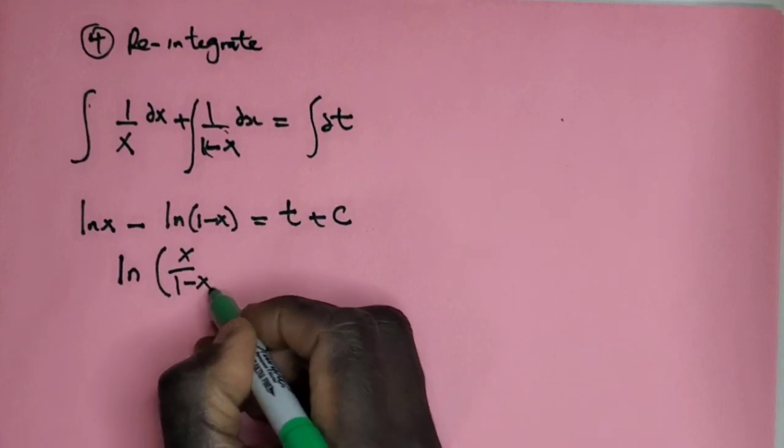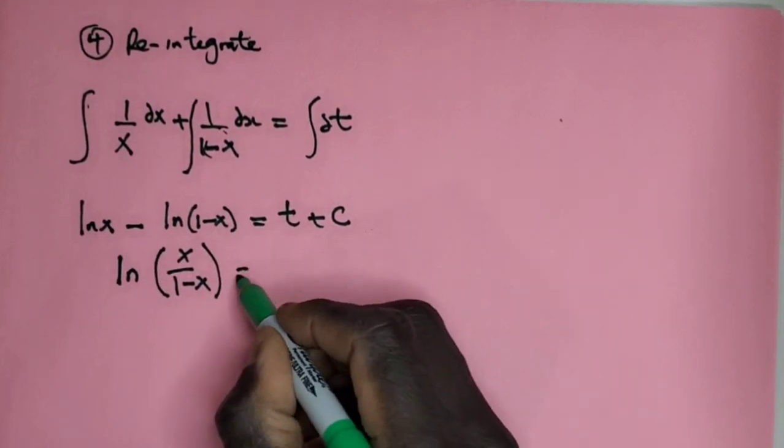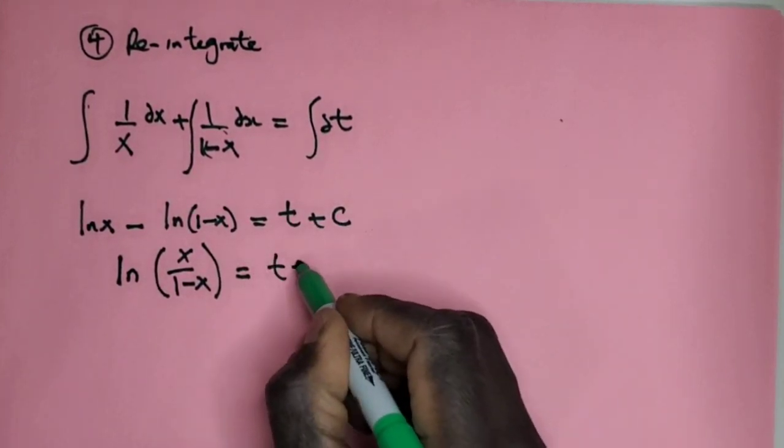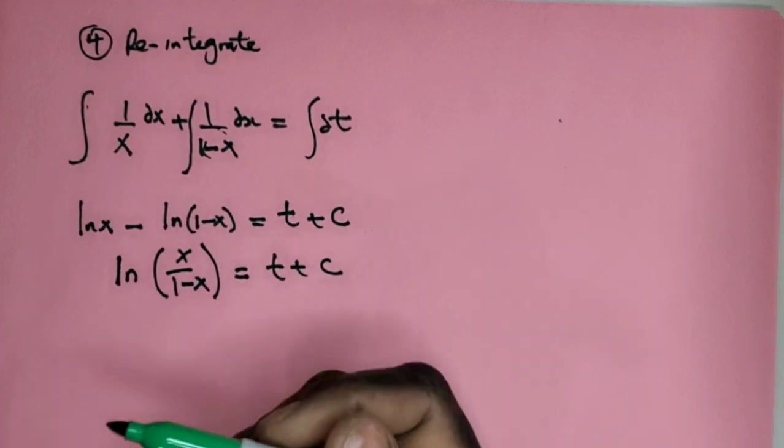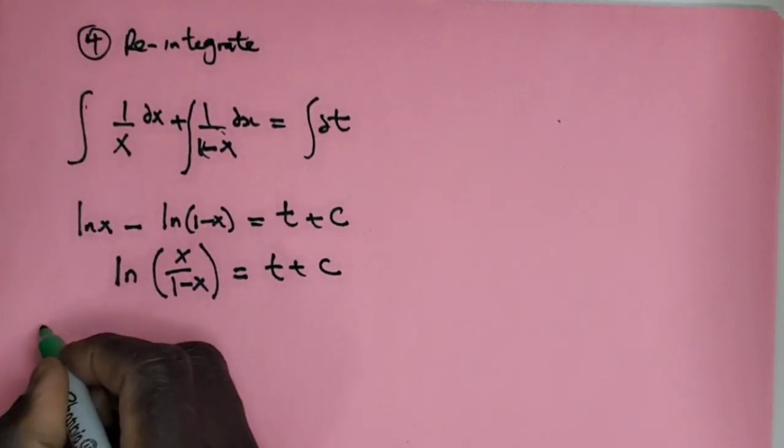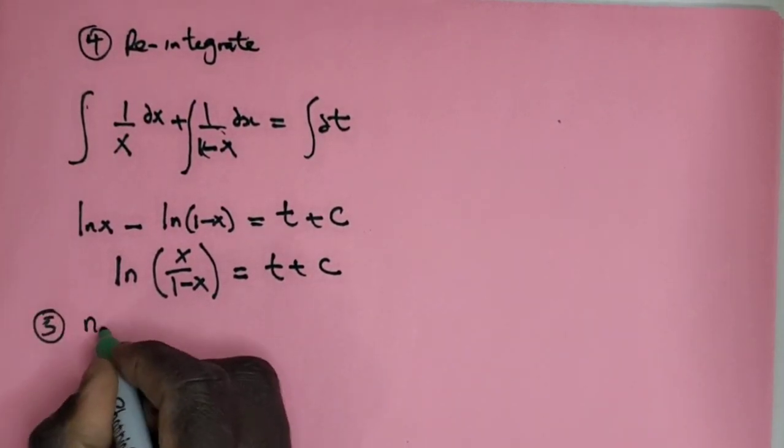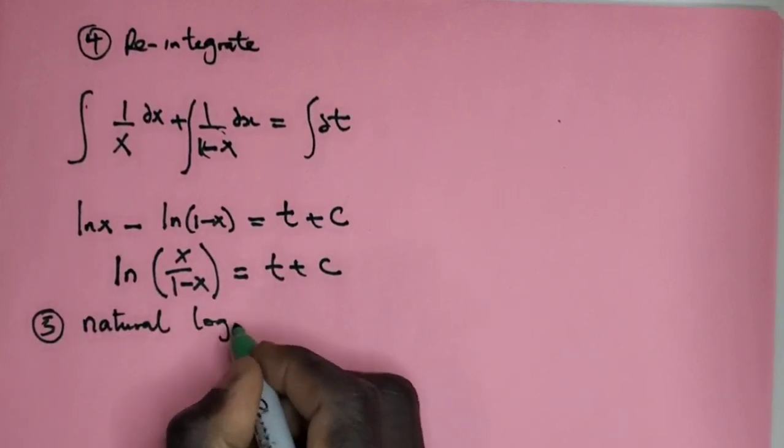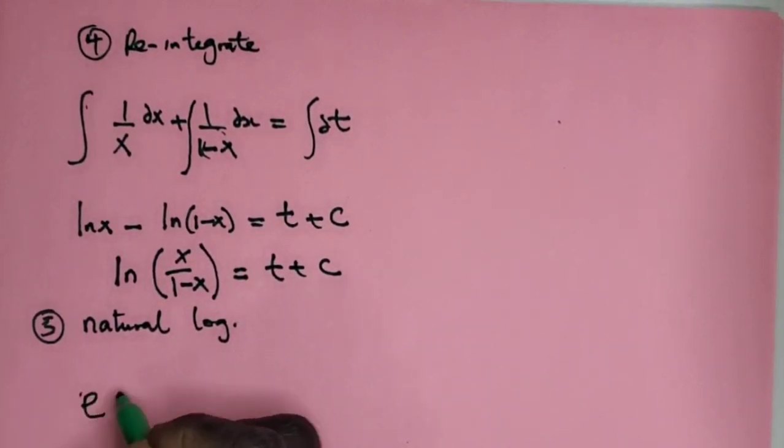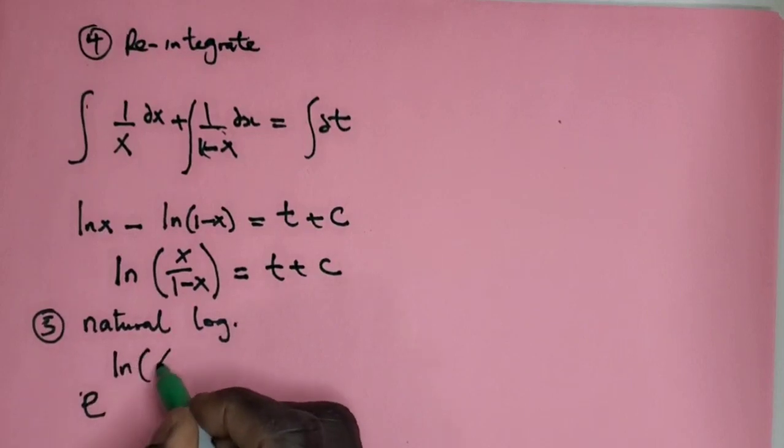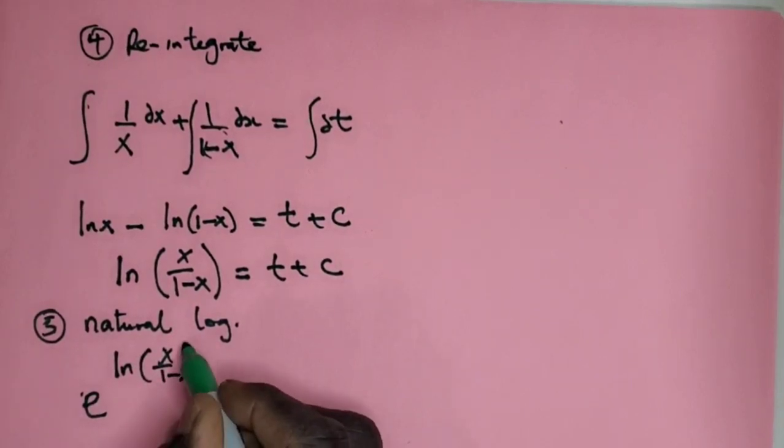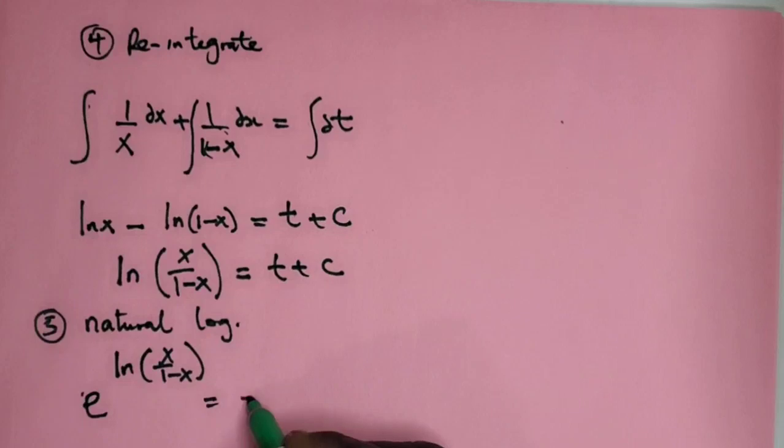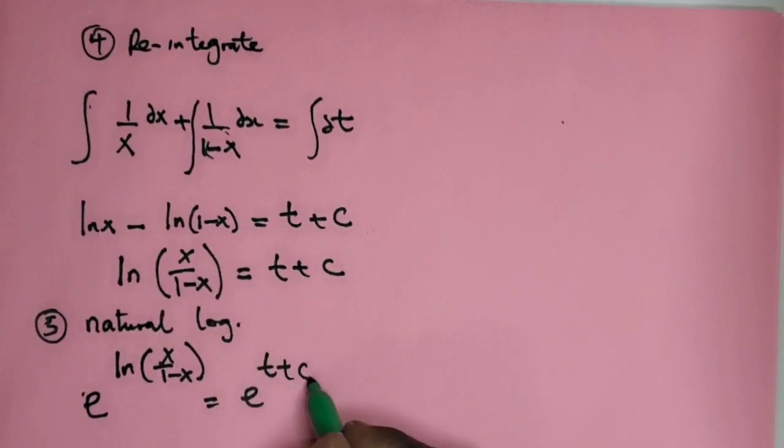So apply a natural log on both sides. Number 5, natural log. So it's going to be e to the ln(x/(1-x)) = e to the (t+C).